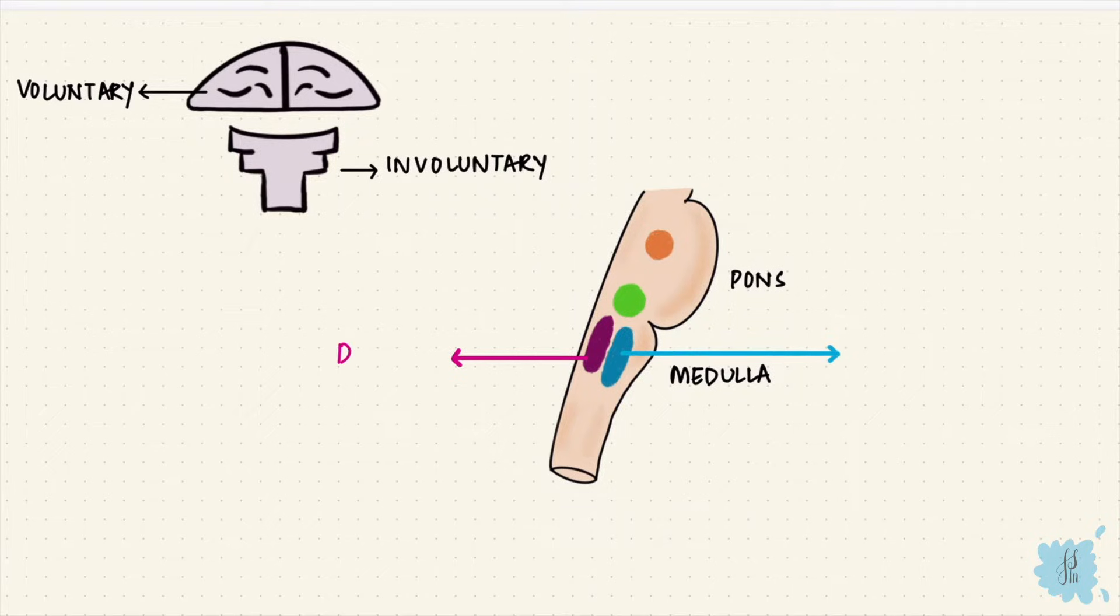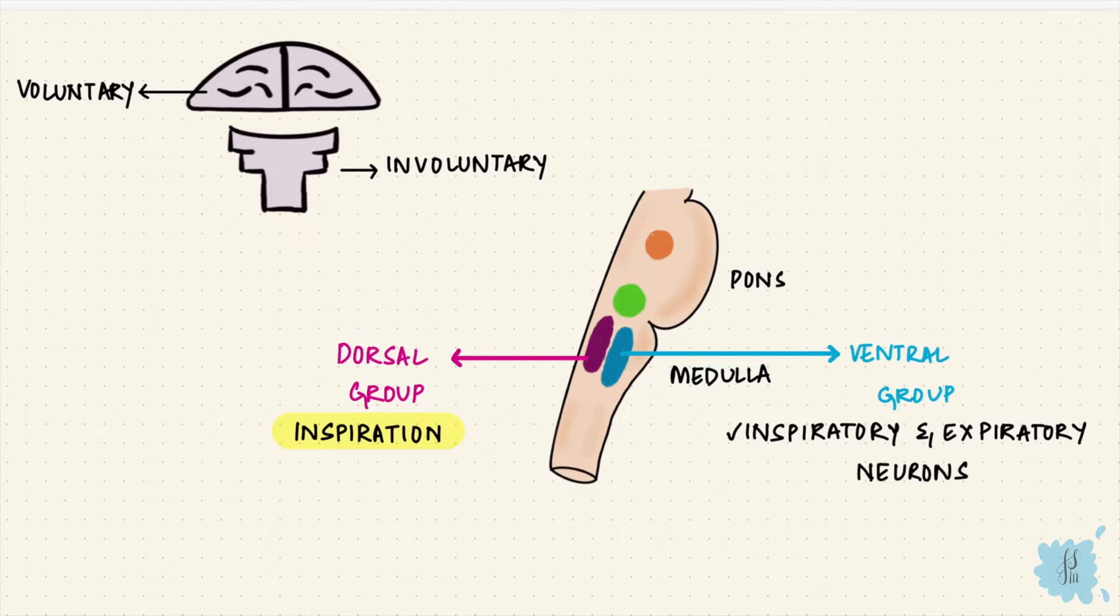The medulla has the dorsal and ventral group of neurons. The dorsal group controls inspiration, and the ventral group has both inspiratory and expiratory neurons, but mostly controls forced expiration.